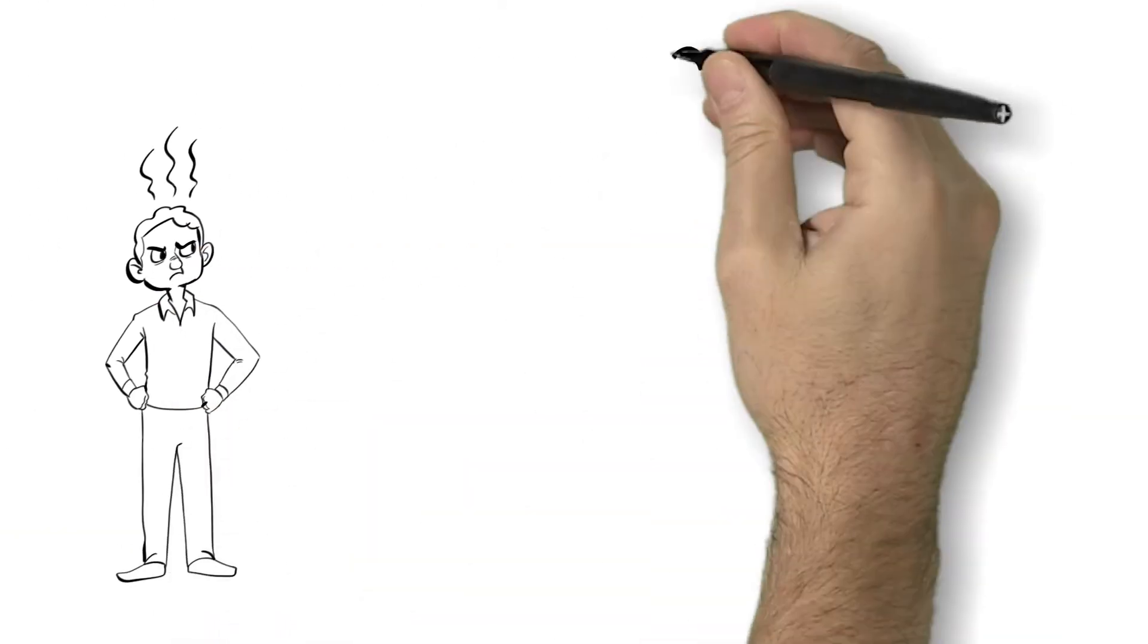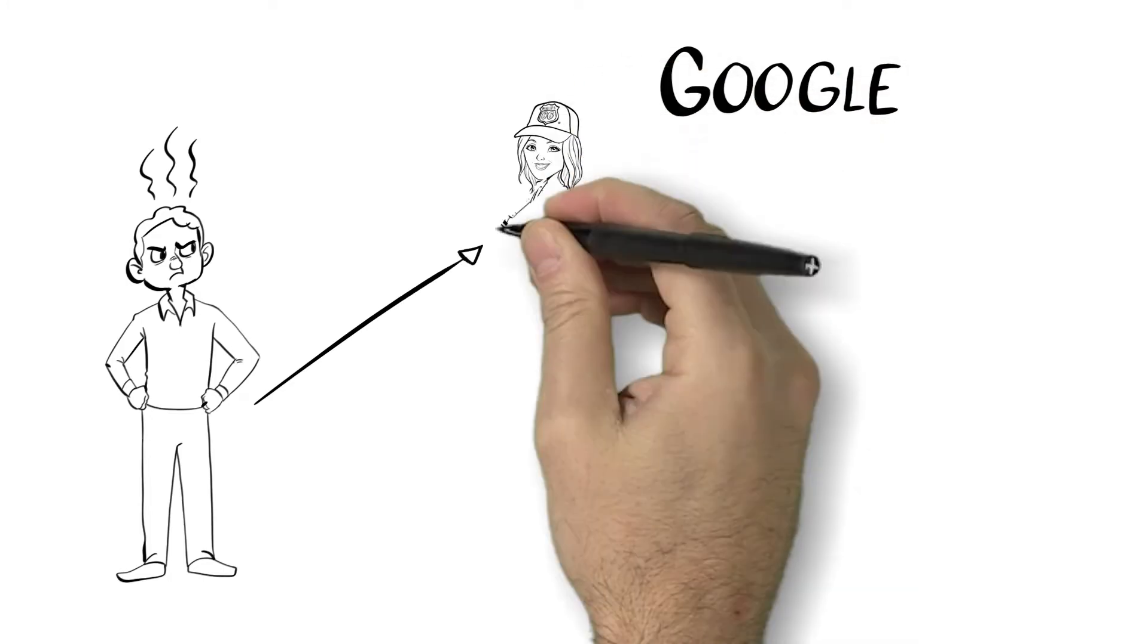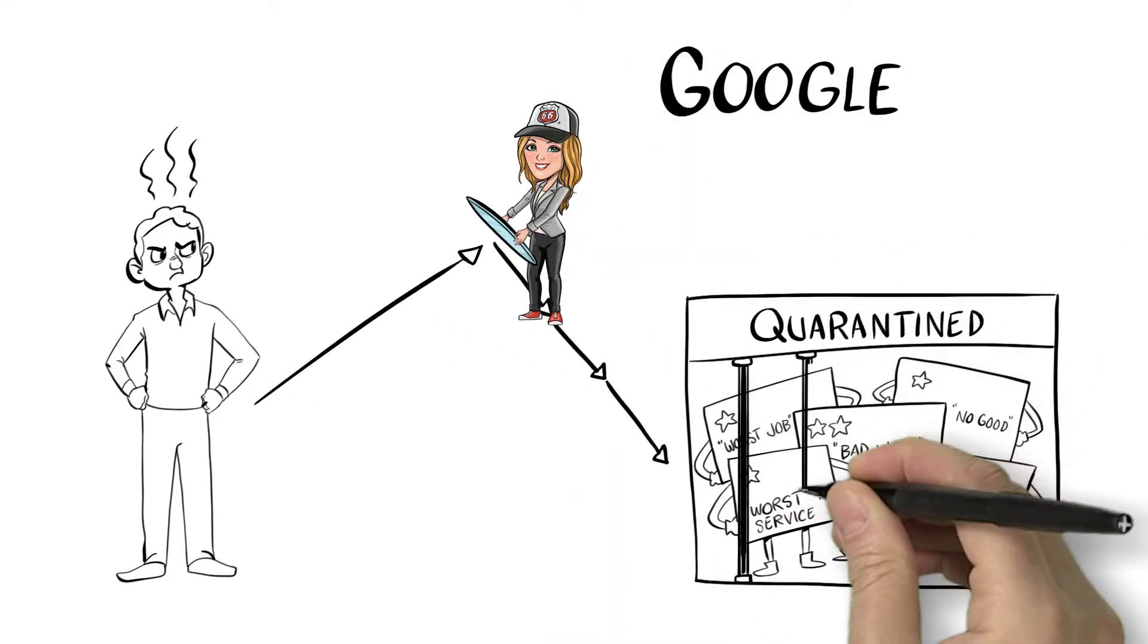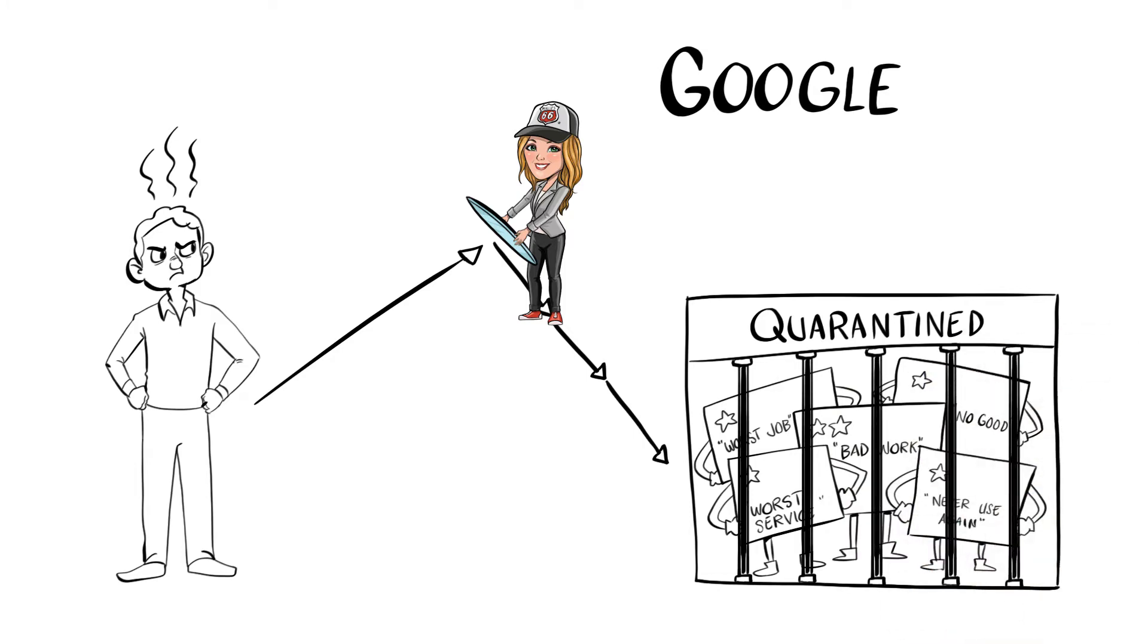Or if things don't go so well, Jamie rescues the situation, letting the customer vent privately in our system instead of airing dirty laundry online for all to see.